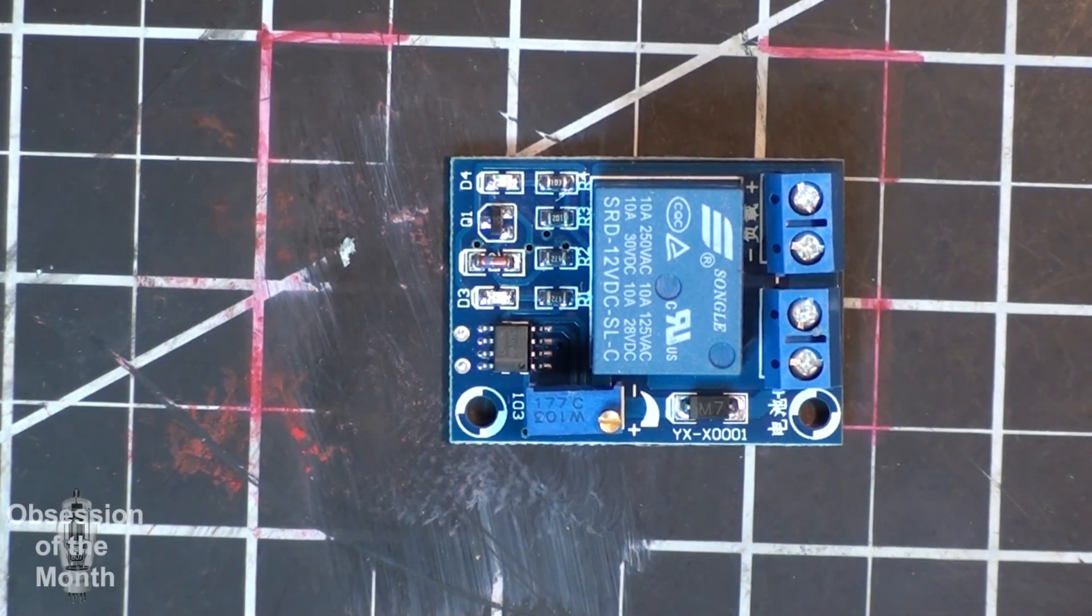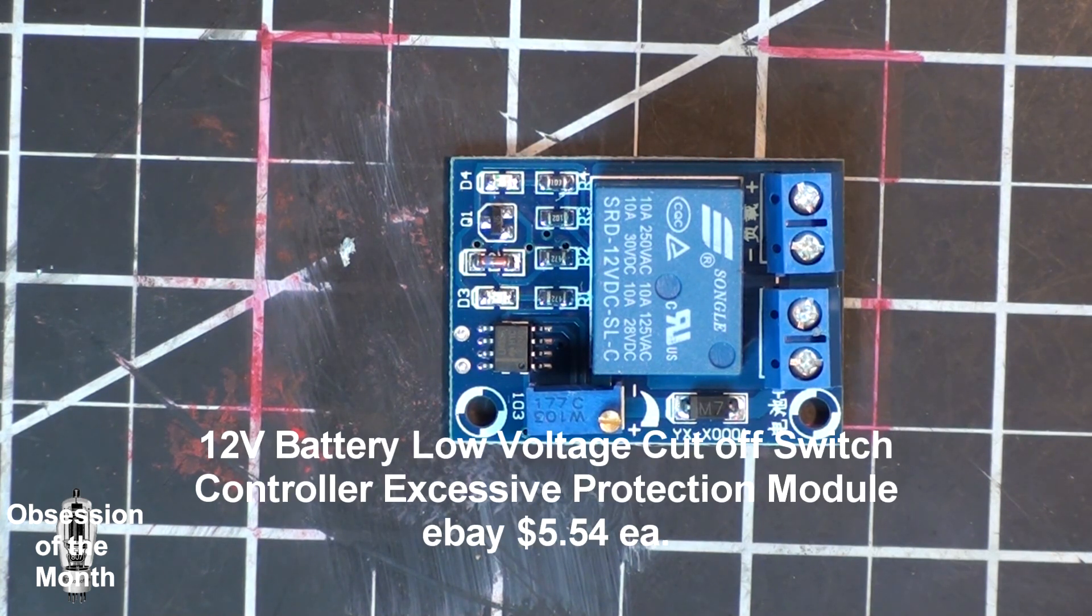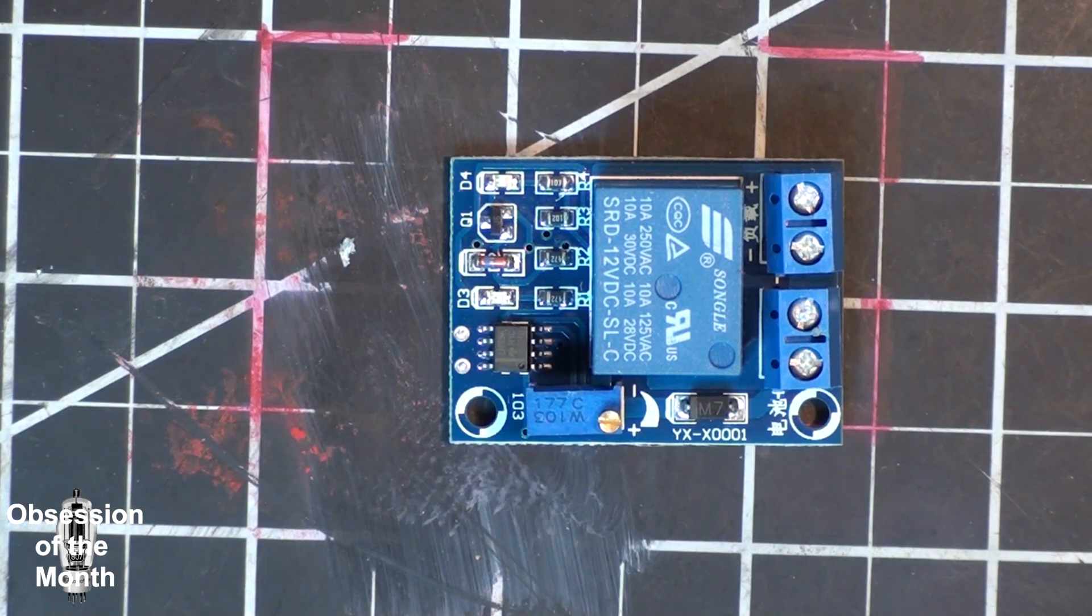All righty then, this morning we have a very small battery cutoff. This is a small under voltage switch you put in between your load and a battery. When the voltage drops below a certain voltage, the relay will cut out and disconnect your load.